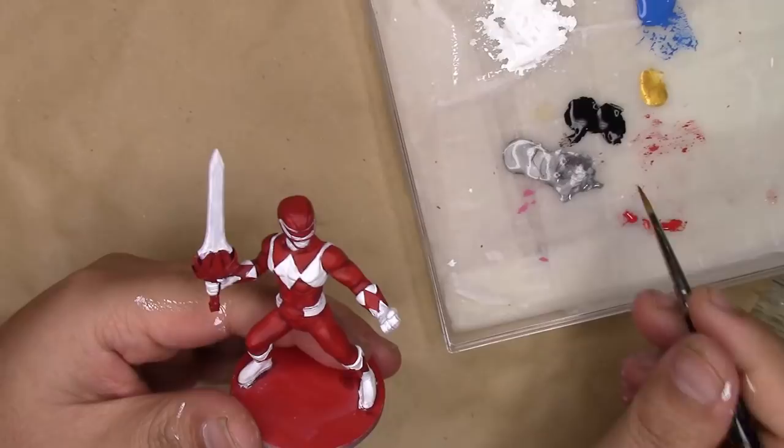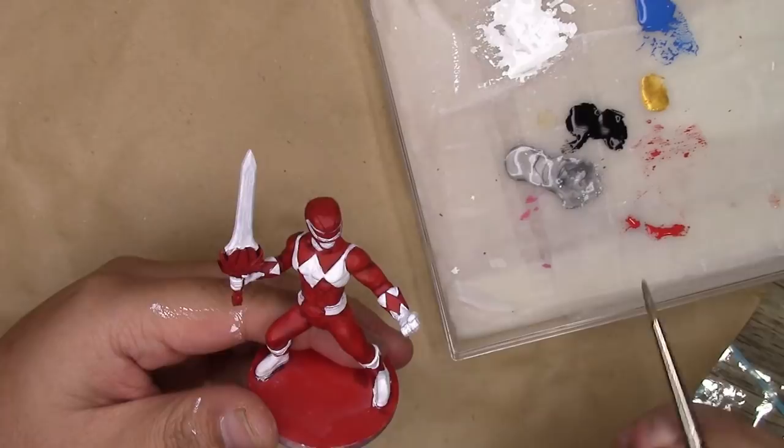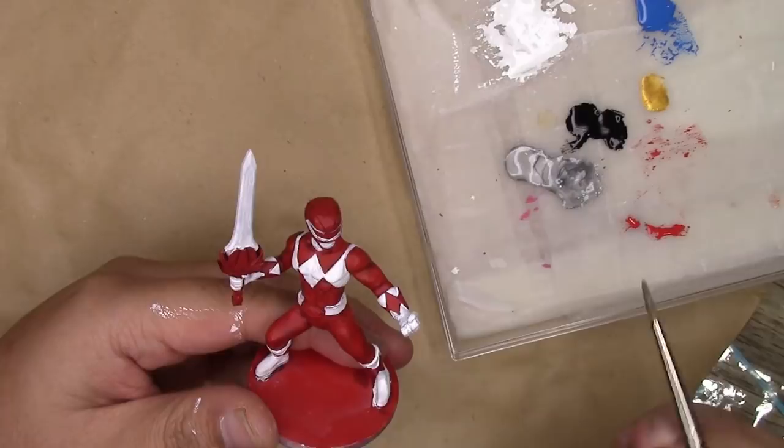Now we're onto the final details. We're going to put some red, some white, some black, and some silver and gold onto our wet palette and thin them out to our base coat consistency.